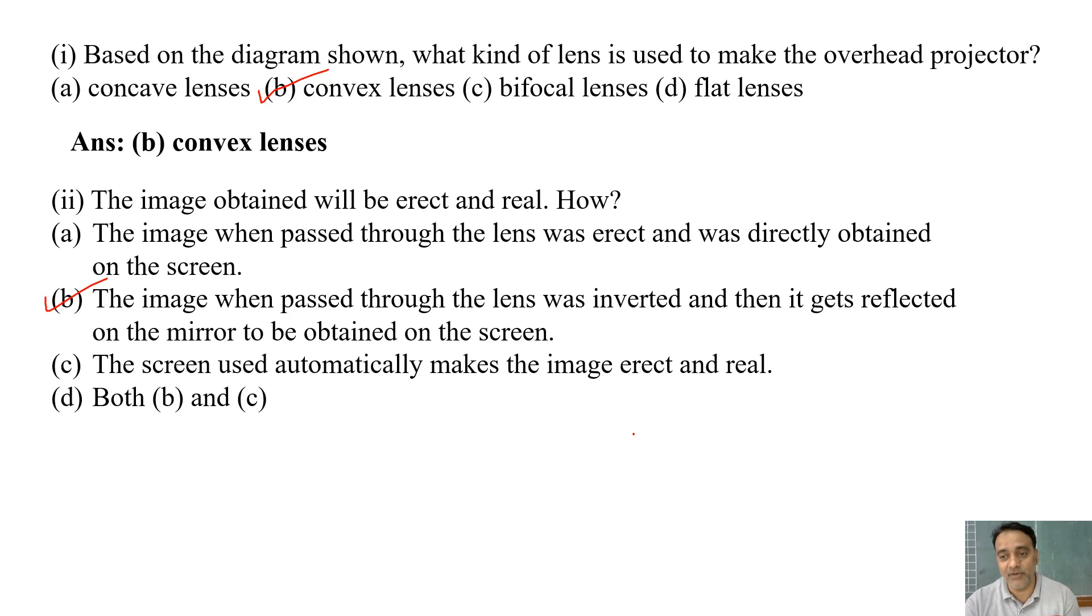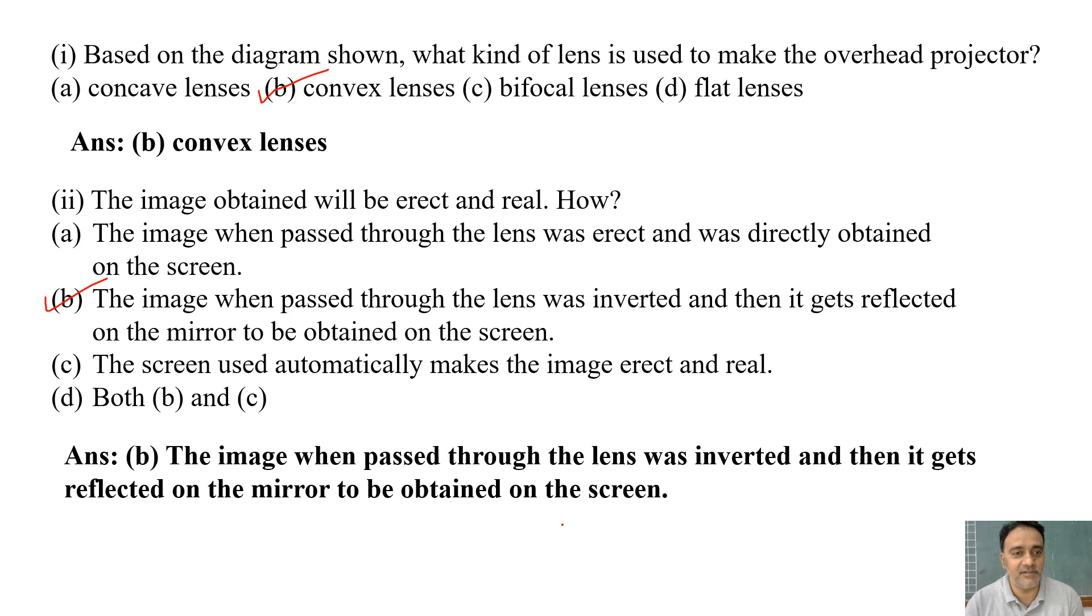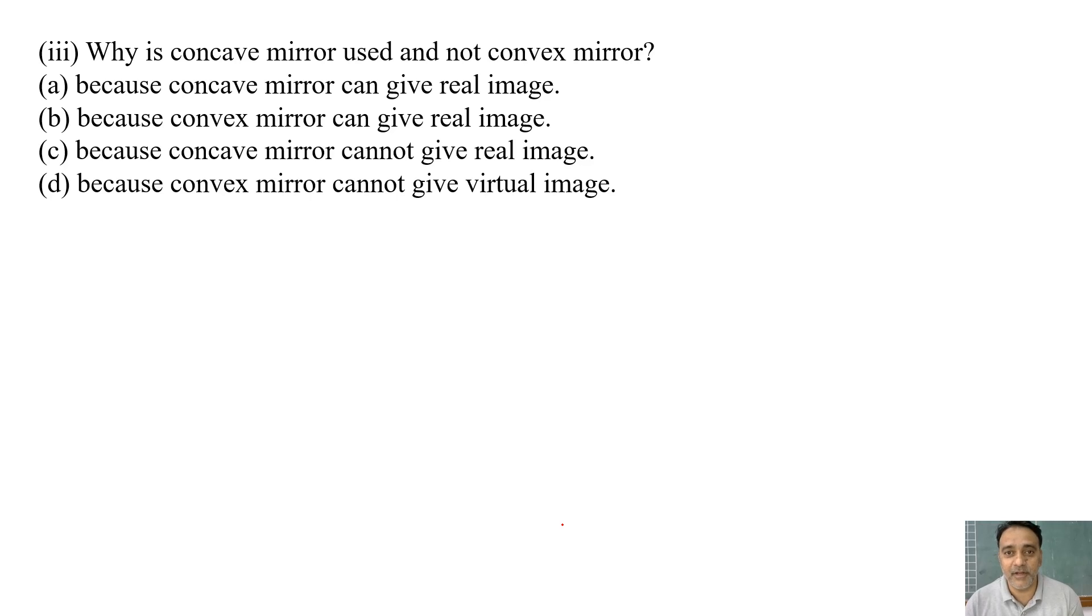Why is concave mirror used and not convex mirror? Because concave mirror can give real image. Because convex mirror can give real image. First option concave, second convex. Because concave mirror cannot give real image. And the last option is because convex mirror cannot give virtual image. The correct option is the first one, that is because concave mirror can give real image. Convex always has virtual image. So the correct option is A.